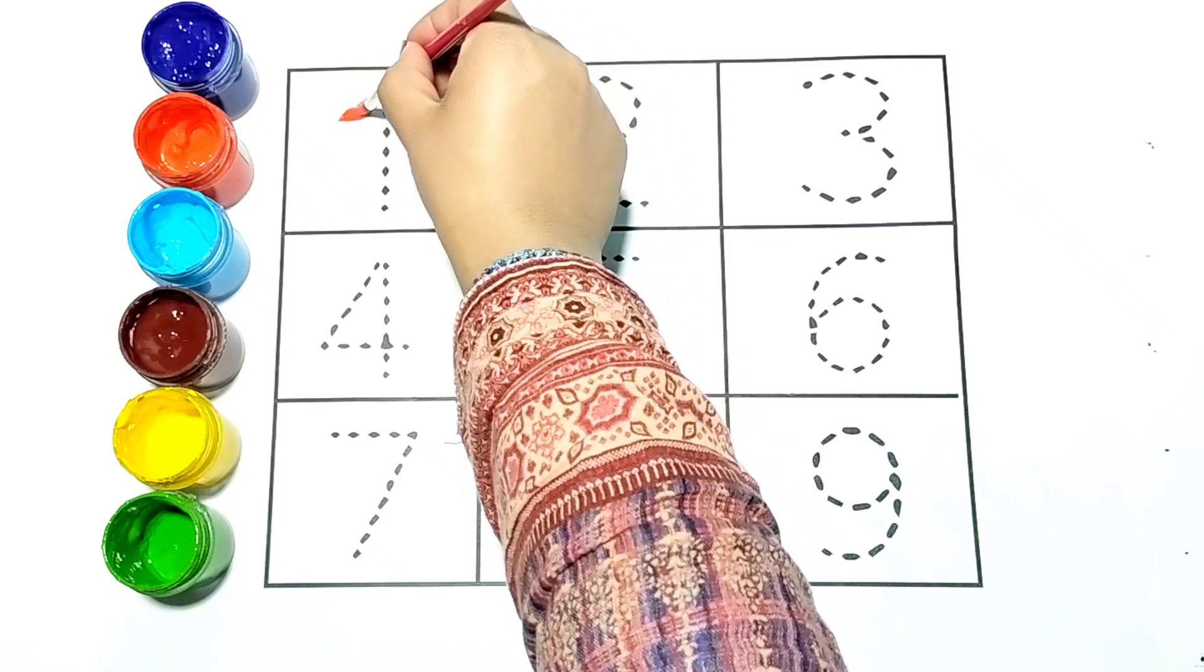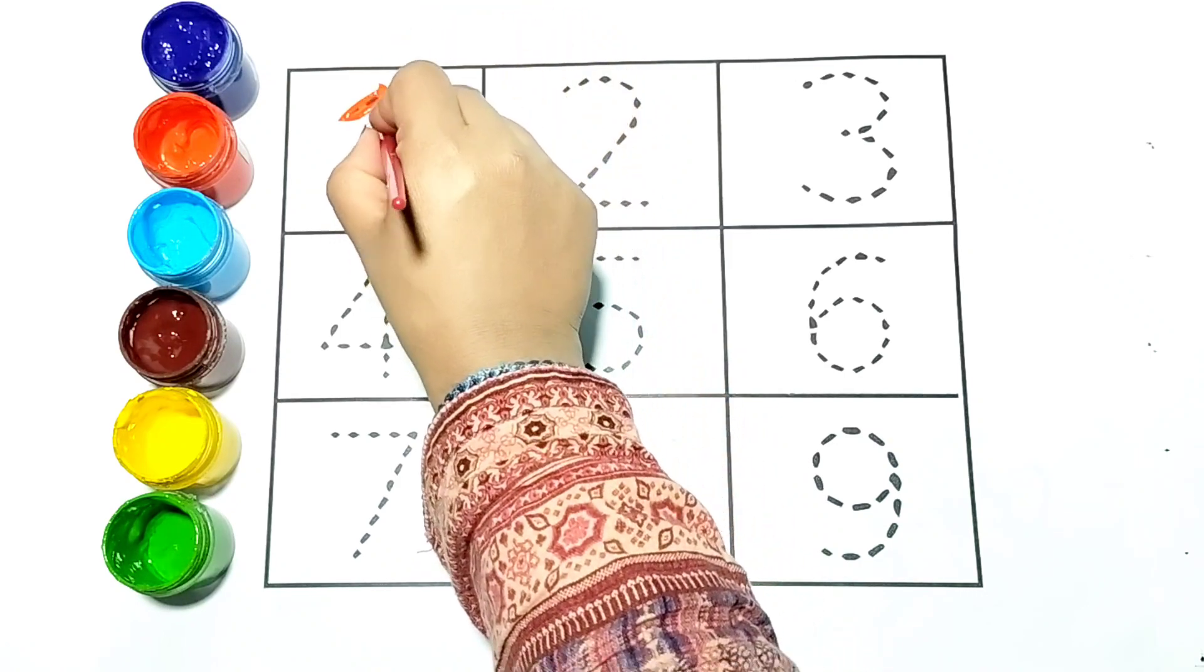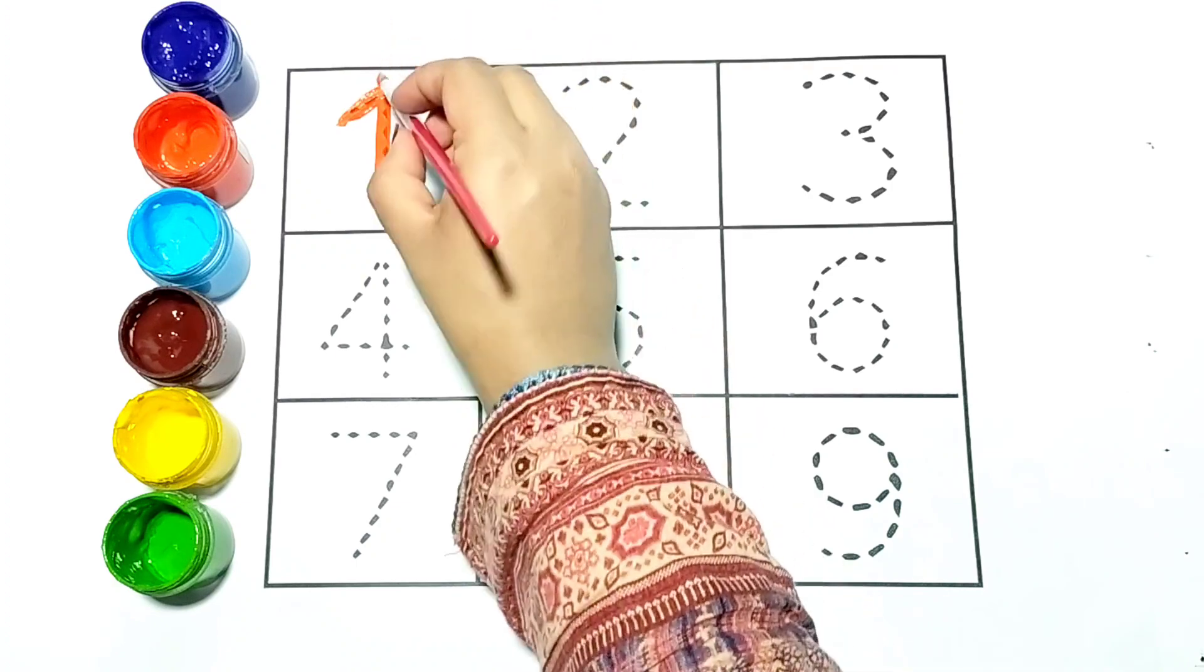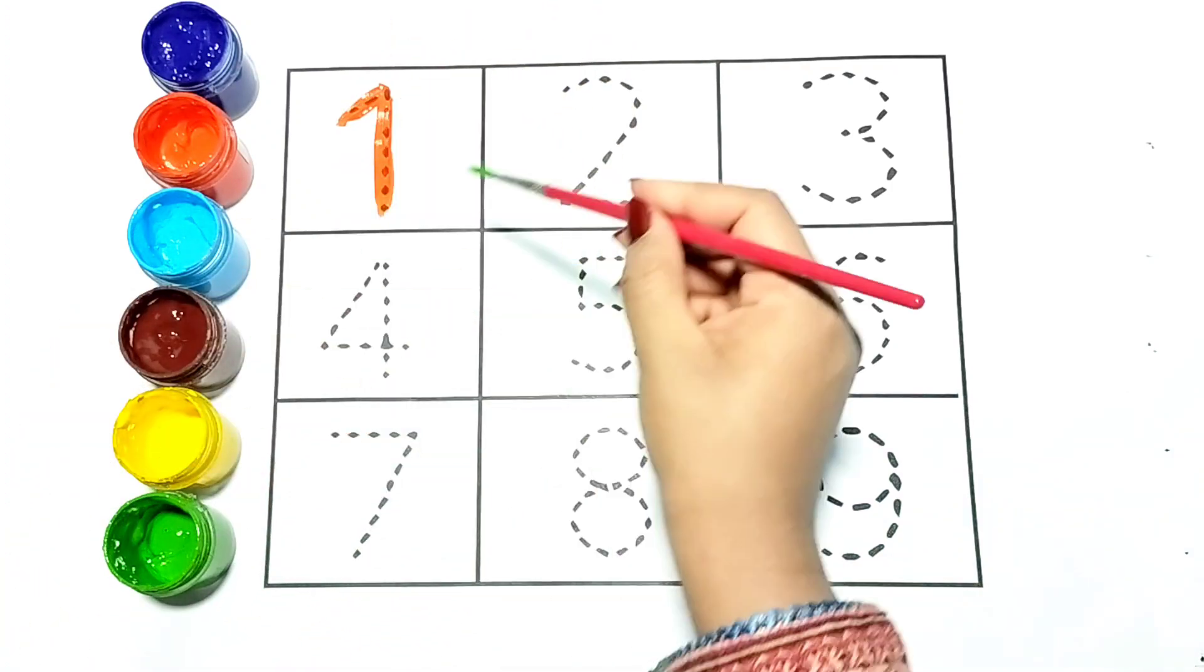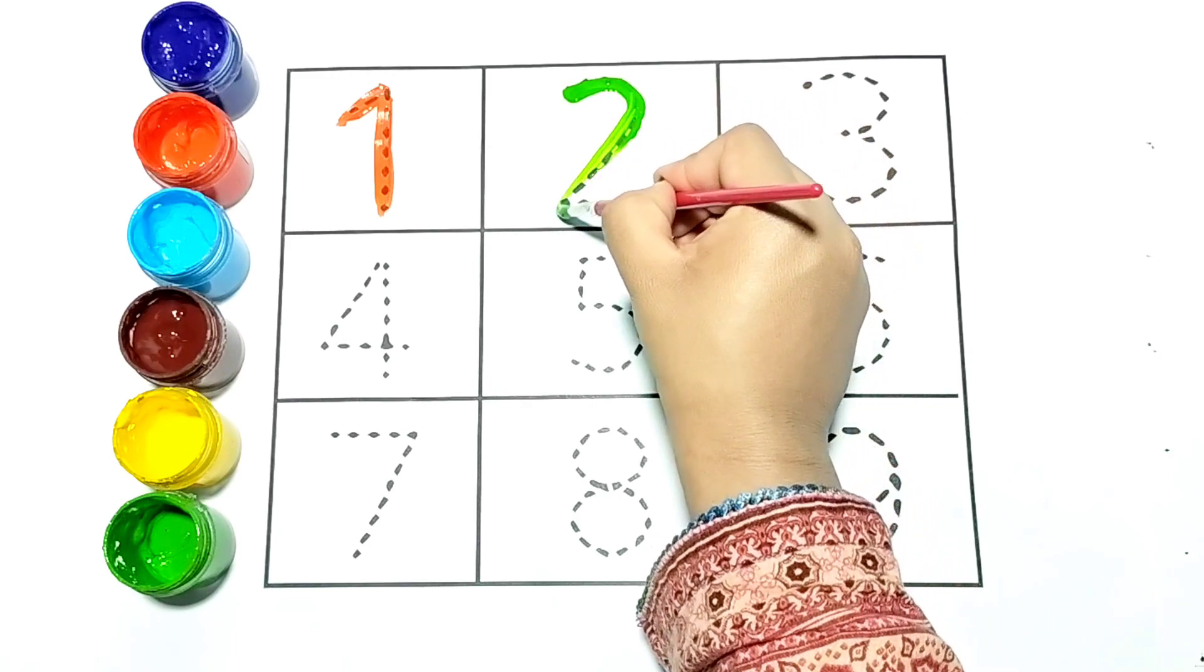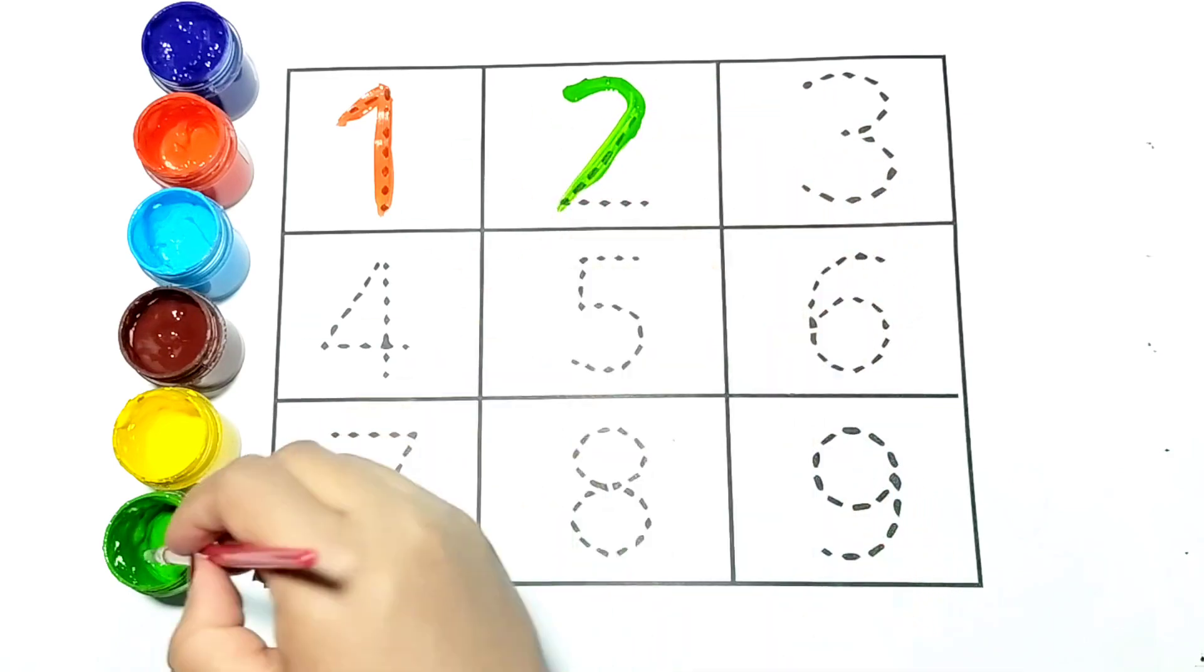I am writing one with orange color. Next number is 2. I am writing it with green color.